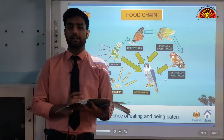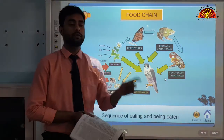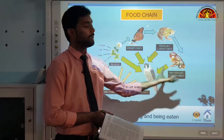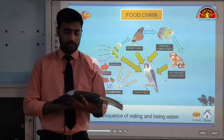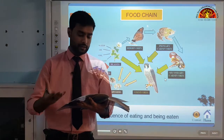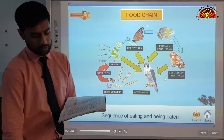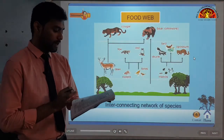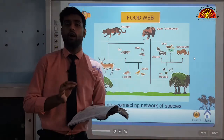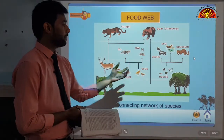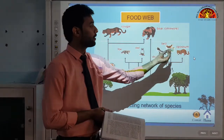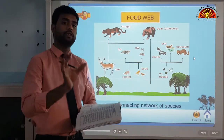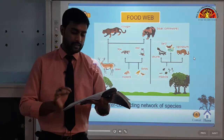Food chains are not isolated from one another. For example, a mouse feeding on grain may be eaten by different secondary consumers, and those carnivores may be eaten by various tertiary consumers. Each carnivore may consume more than one type of prey, so food chains get interlocked with one another. This interconnecting network of species is known as a food web.